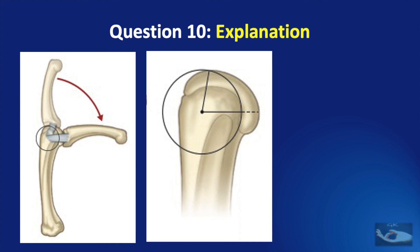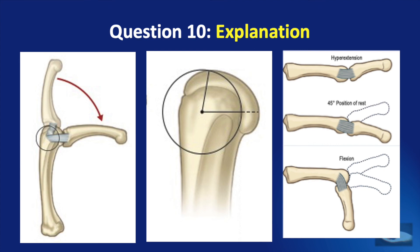That is the reason why the metacarpophalangeal joints of the fingers must be immobilized in a position of flexion, so that the collateral ligaments are stretched. If kept extended, the collateral ligaments will be lax and will undergo fibrosis and become shortened, which will not allow further flexion of the metacarpophalangeal joints.